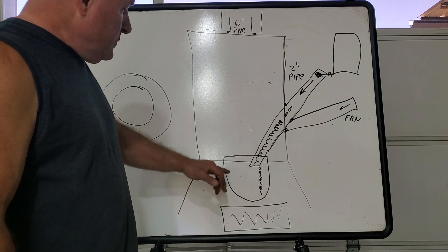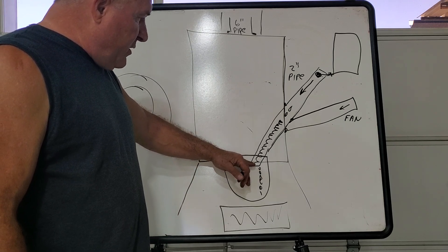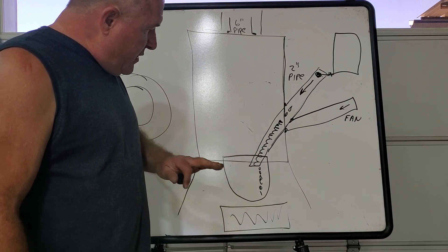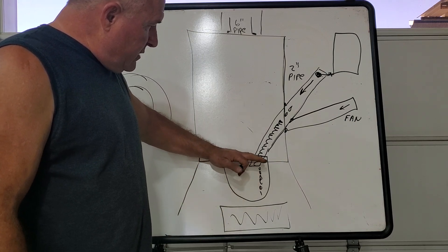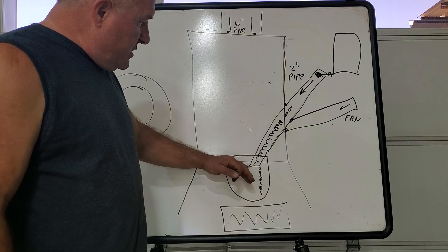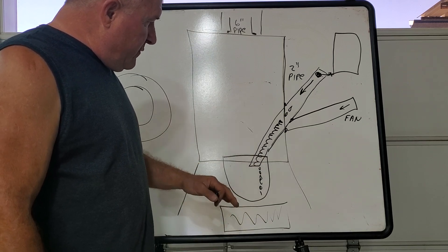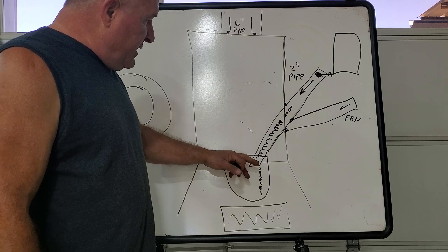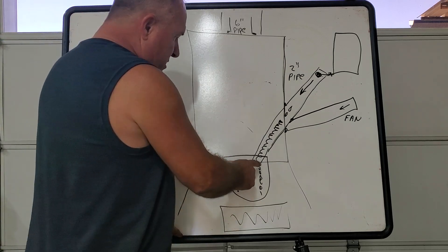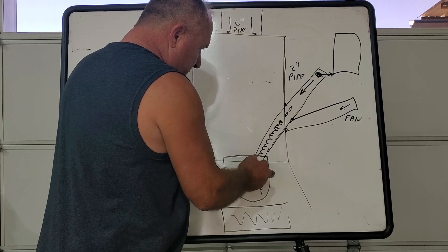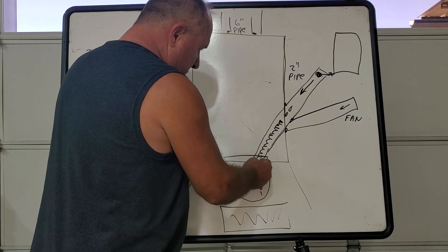You don't want to stick it down too far though, because it'll get in the way of sliding the bowl in. So the more this sticks down, the higher your unit has to be. But you don't really need it to stick down; it could actually be flush right there, so you can just slide the bowl in.